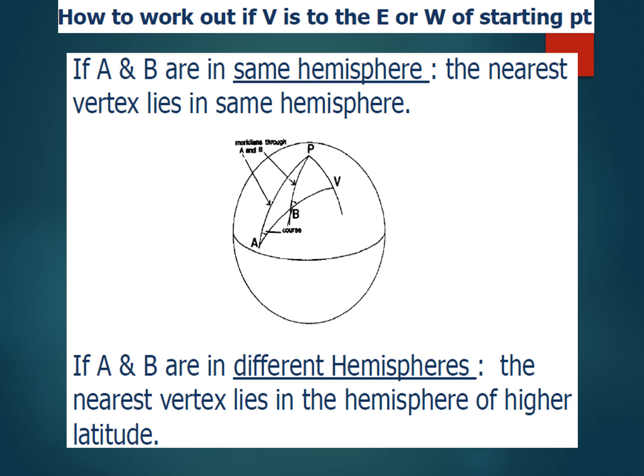There is a rule of thumb for the vertex: if your initial course and final course are in the same hemisphere, the vertex will lie in the same hemisphere, outside the course, towards the higher latitude. If A and B are in different hemispheres or different quadrants, the nearest vertex will lie in the hemisphere of the higher latitude. If initial and final courses are in different quadrants, the vertex lies between A and B; if in the same quadrants, the vertex lies outside A and B.